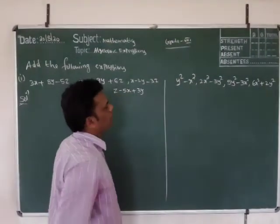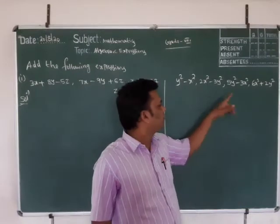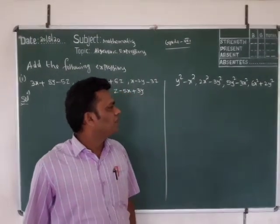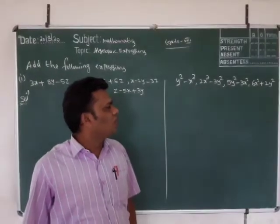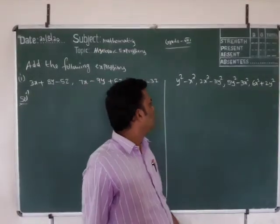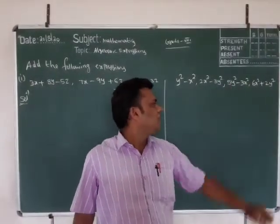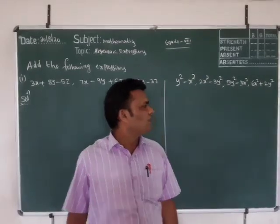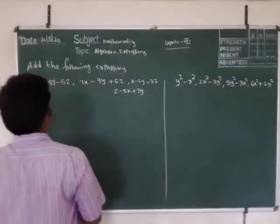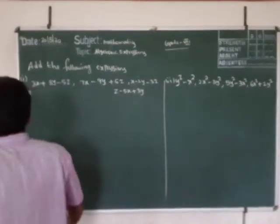This is the second problem: y squared minus x squared, 2x squared minus 3y squared, 5y squared minus 3x squared, 6x squared plus 2y squared. So this is the first problem and this is the second problem.